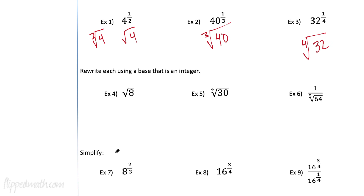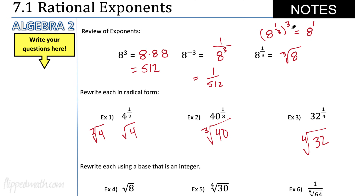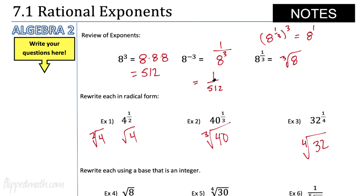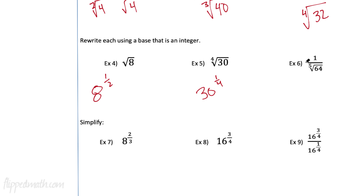What about working backwards — writing it with an integer base? The square root of 8 to the 1/4 power: remember, if there's no little number there, it's a 2. How would we write the 4th root of 30 using an exponent? That would be 30 to the 1/4 power. And for 1 over the 5th root of 64: since it's 1 over something, I know we have a negative exponent. That's 1 over 64 to the 1/5 power, which equals 64 to the negative 1/5 power.